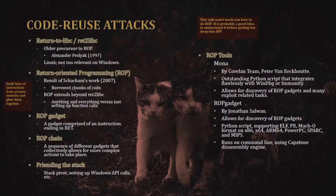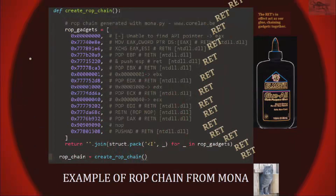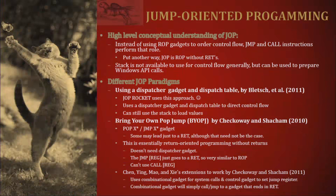Prevalent ROP tools you've likely used include Mona by the Corelan team and Peter van Eeckhoutte, as well as ROPgadget. Here's an example of a ROP chain generated by Mona — the addresses placed on the stack as part of the payload are fetched after each gadget executes and ends in a RET, demonstrating how the stack controls execution flow throughout the chain.